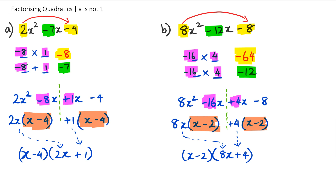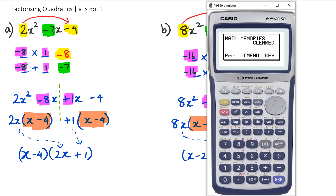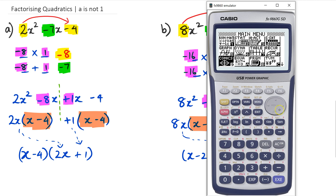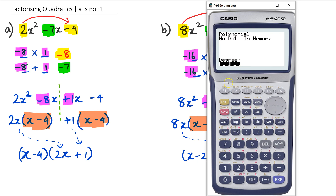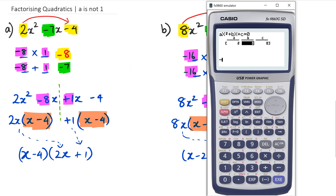Now to show you how to do this in the graphics calculator — remember the graphics calculator actually gives you the solution, and with the solution you can work backwards. So I'm going to go into menu, down to equation, and then into polynomial. Degree is 2, and you've got the values of a, b, and c. For the first problem, a — the coefficient of x squared — is 2, b — the number in front of x — is minus 7, and c — the number by itself — is negative 4. When I solve it I'm actually getting two answers: x equals 4 and x equals negative half.